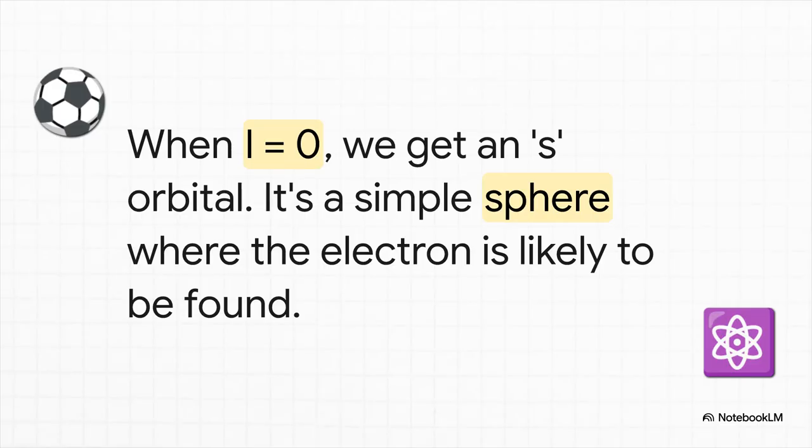Let's look at the most basic one. When L is 0, we get an s orbital, and it's exactly what it sounds like. It's just a sphere. It means the electron has a probability of being found anywhere inside that spherical shape around the nucleus.